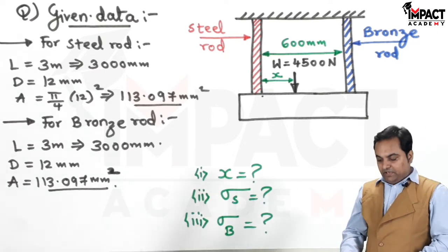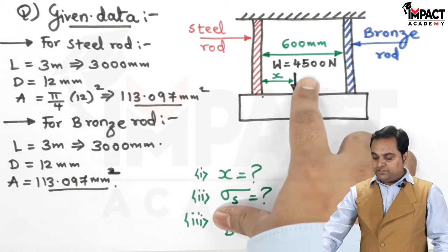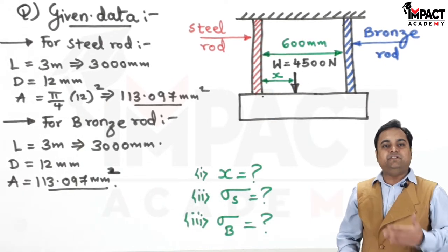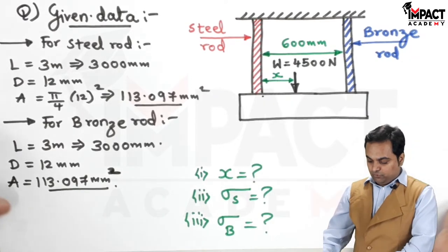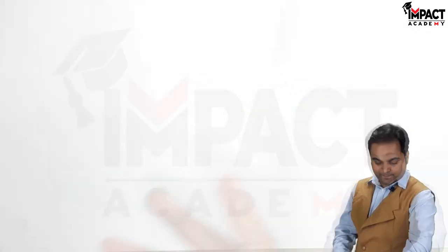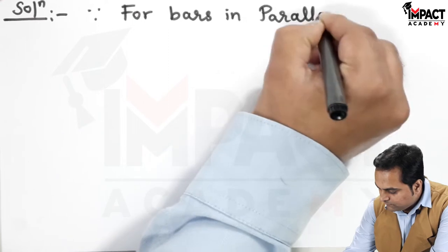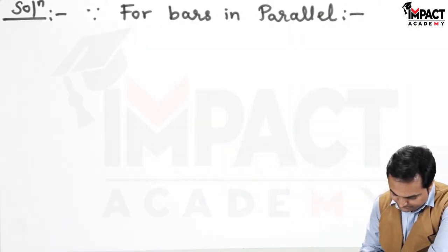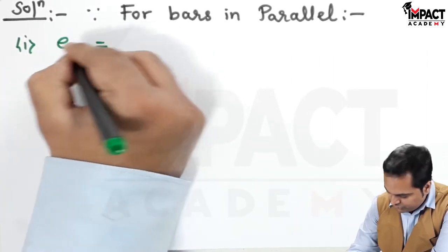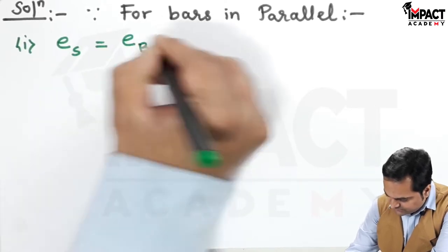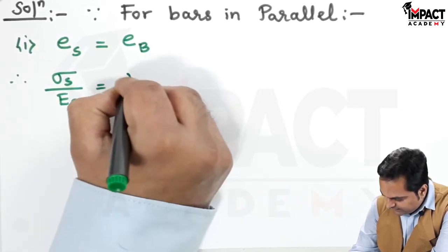With the data understood, we can solve the problem. Since both rods are subjected to the same load, this can be treated as a problem of bars in parallel, where the strain in both rods is the same because the lengths are equal and they are subjected to the same conditions. So strain in steel equals strain in bronze, which gives us σ_s / E_s = σ_b / E_b from Hooke's law.